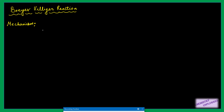First we will take the mechanism and then discuss important points related to it. This reaction takes place on ketones — acyclic ketones and cyclic ketones — and they will give us esters and lactones. For this we need peracids like trifluoroperacetic acid or MCPBA, H2O2. We will take under what conditions what type of peracid will be used. So first we will understand the mechanism.